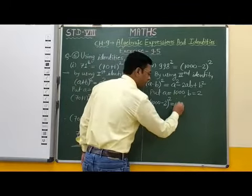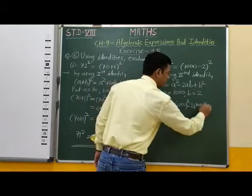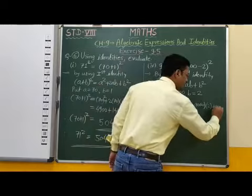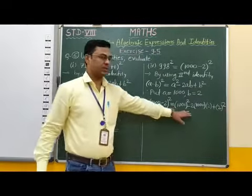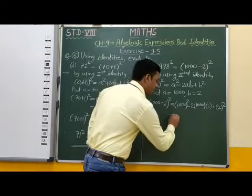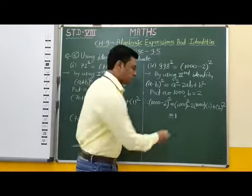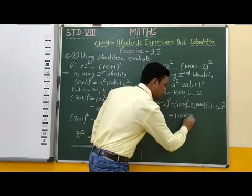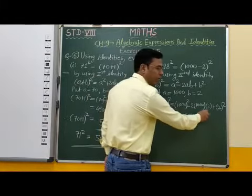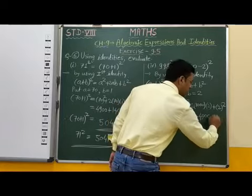Now we simplify this. 1000 squared: since 1 squared is 1 and there are three zeros, in the square there are six zeros, giving 1,000,000. Then minus 2 into 1000 into 2: that is 2 into 1000 equals 2000, and 2000 into 2 equals 4000, so minus 4000. And 2 squared equals 4, so plus 4.